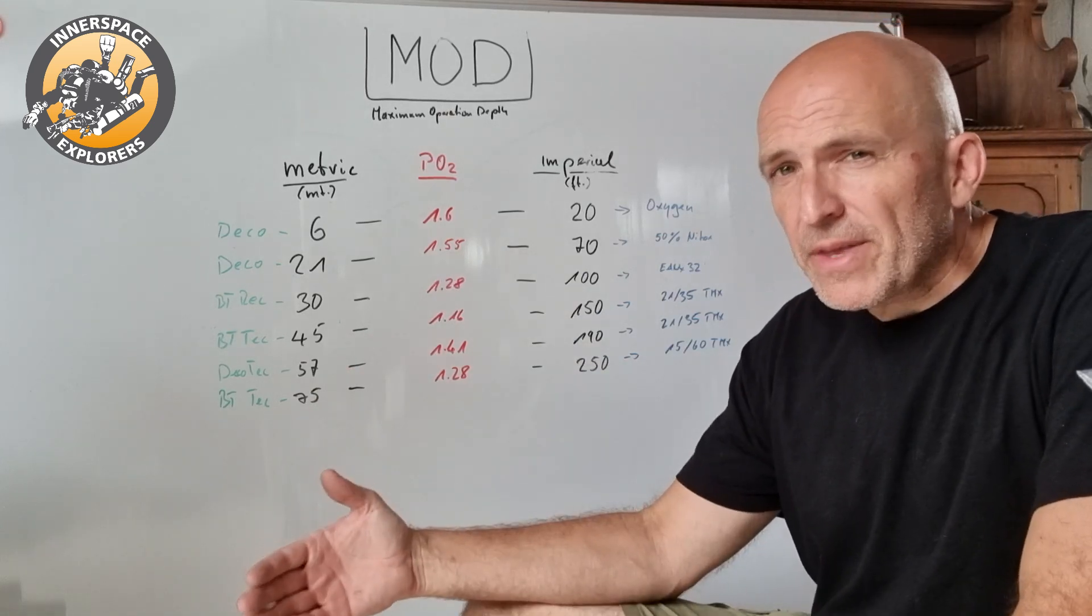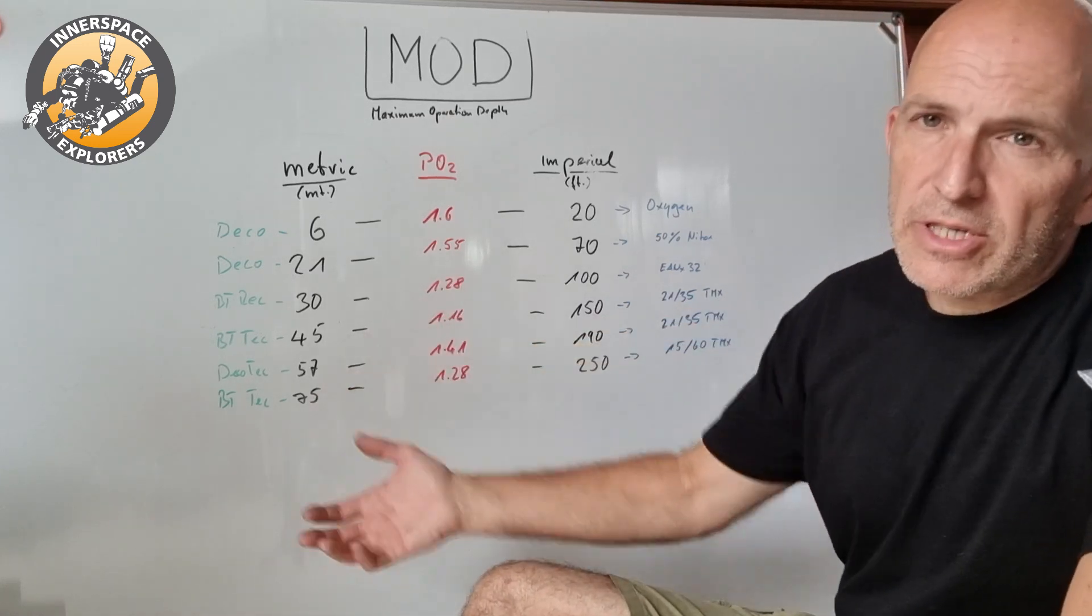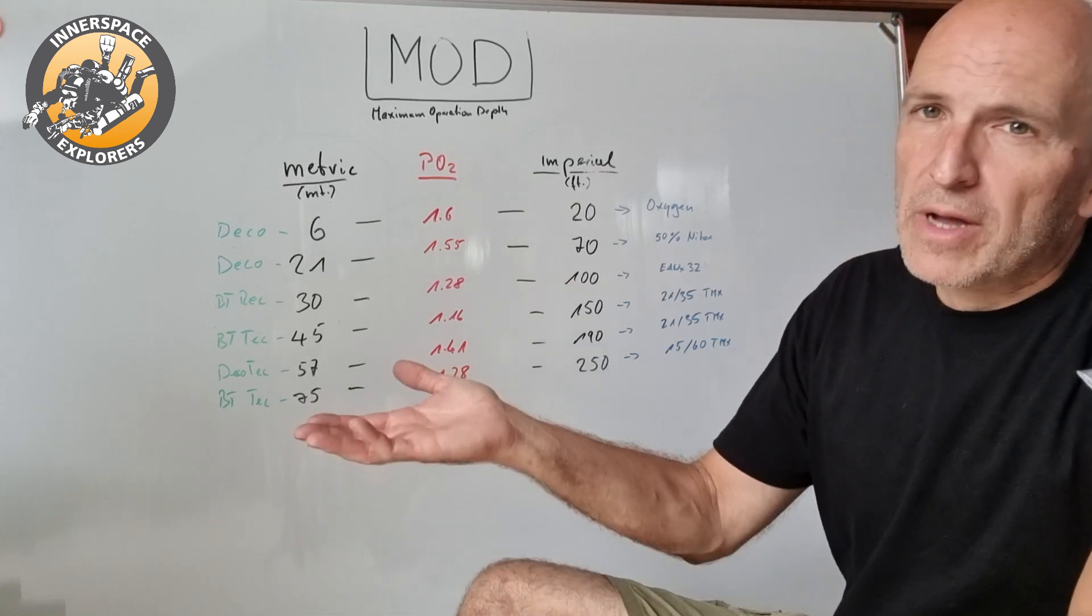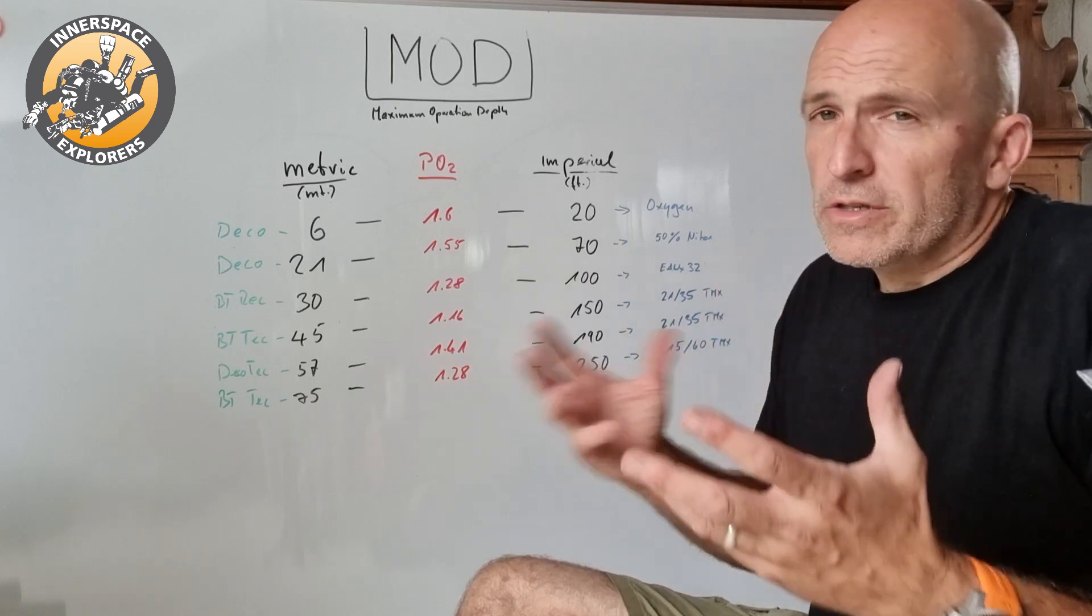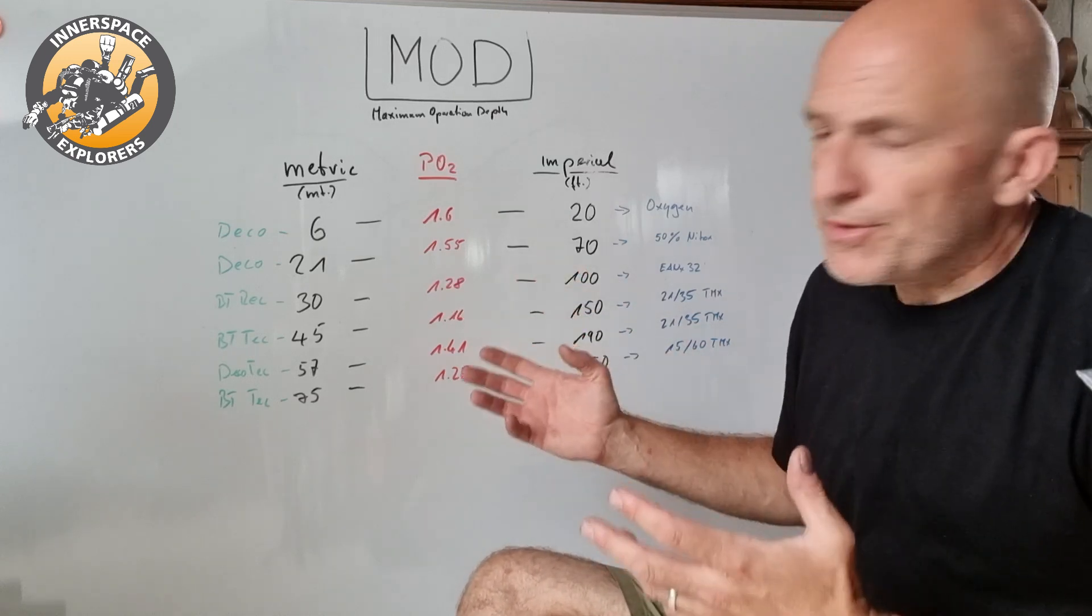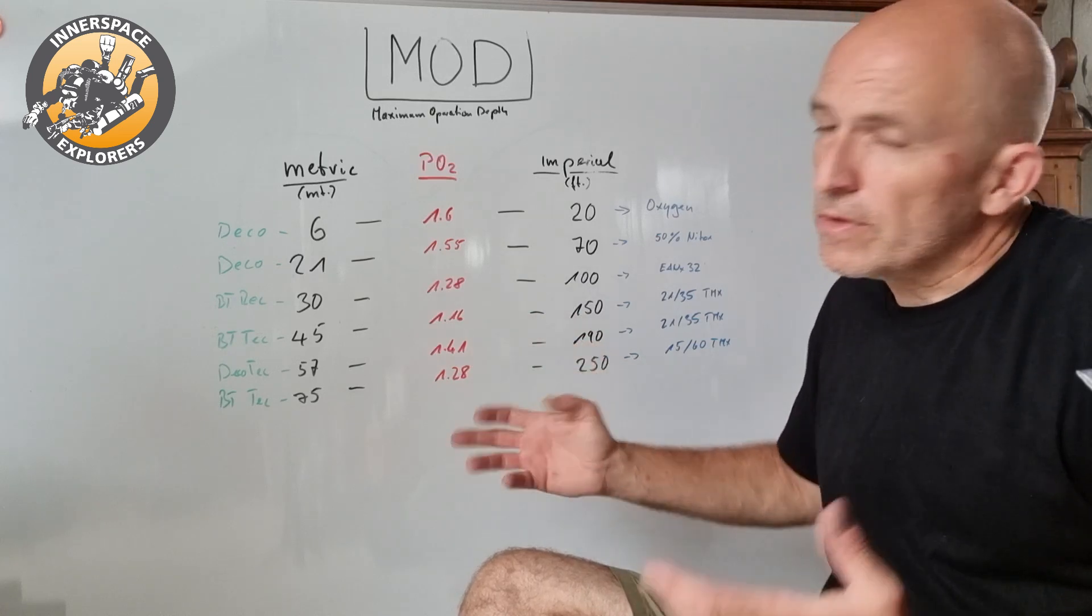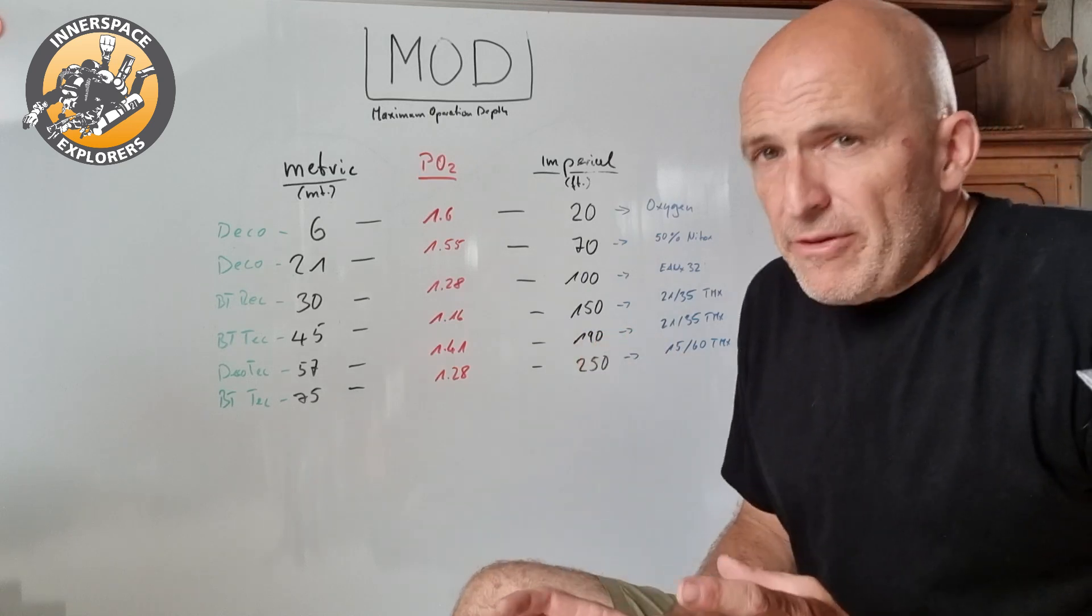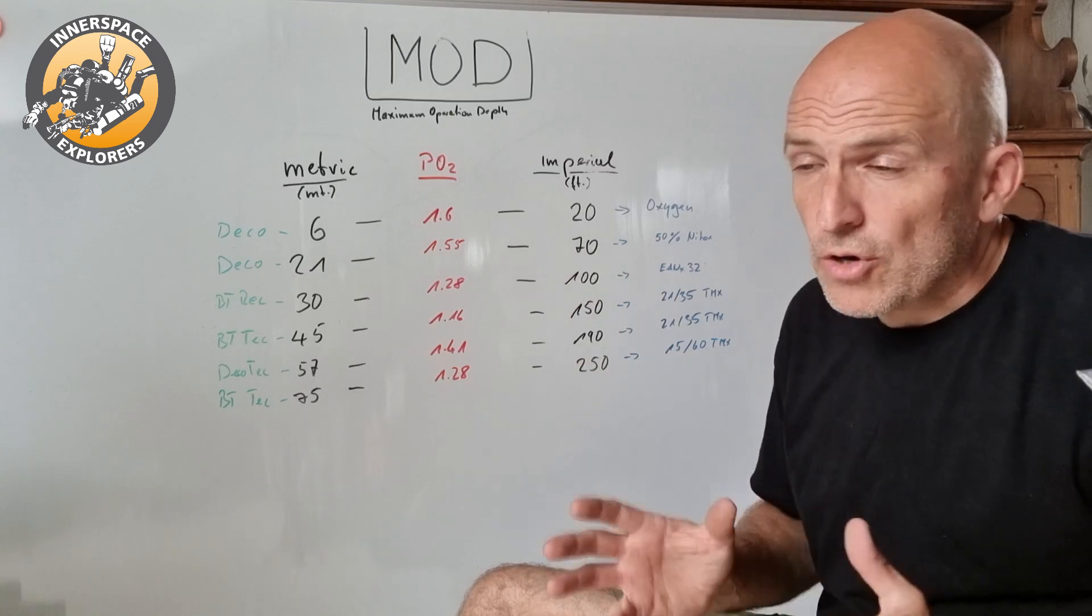Again, if I use bottom gas 21/35, I can use it down to 45 meters, so it's my target depth, the maximum depth that I can go to with that gas. If I use it as a deco gas, it is my switch depth. At 57 meters I would switch to 21/35 if I'm coming up. Having the two different functions of the gas, I use them with a different PO2: the low PO2 if I want to use it as a bottom gas, the high PO2 if I want to use it as a decompression gas.